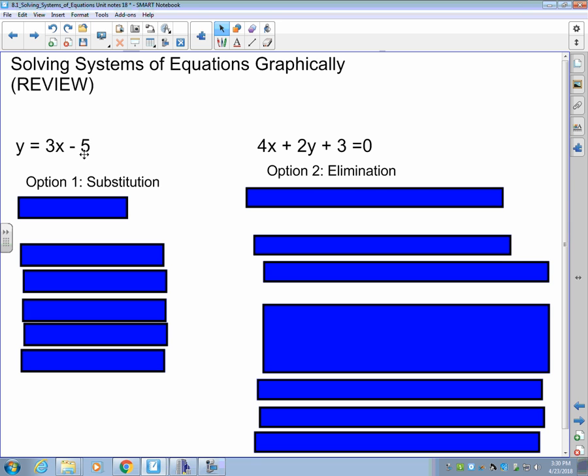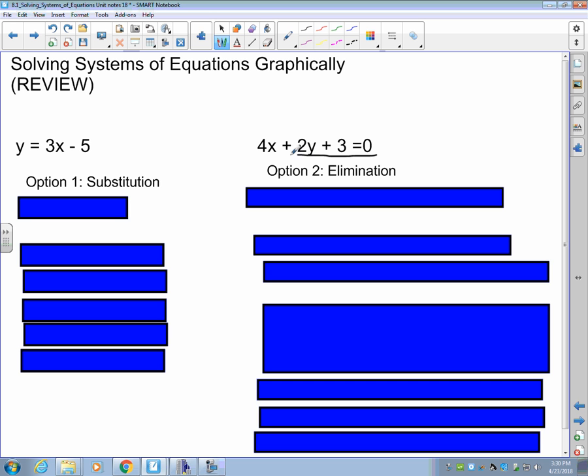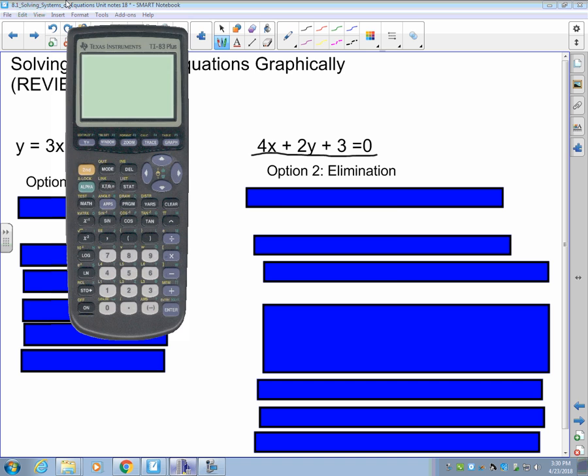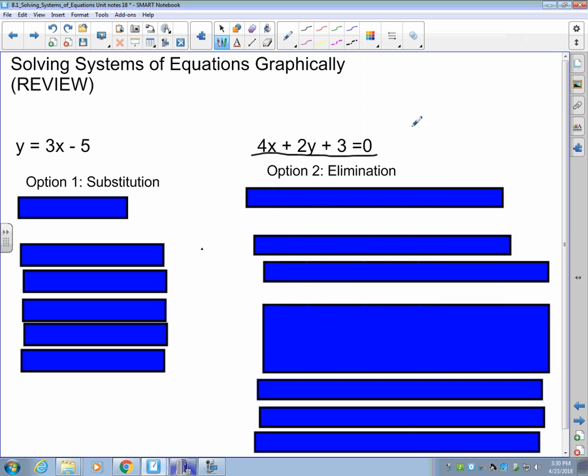Y equals 3x minus 5. That's our first degree equation. That's our linear one. And we have this other one, 4x + 2y + 3 = 0. So this was our linear system. Two linear equations, both first degree. That x only has an exponent of 1. So what we're going to do here is we are going to take this and we are going to rearrange this equation. This equation right here needs to be rearranged so that it is in the y equals form.